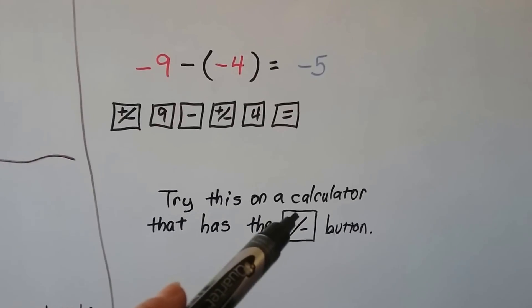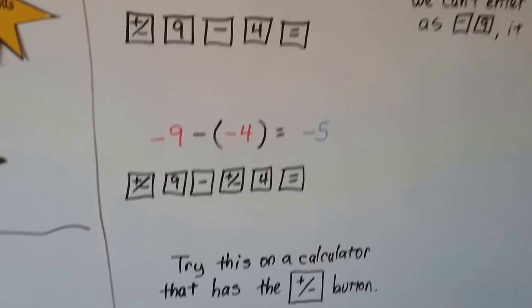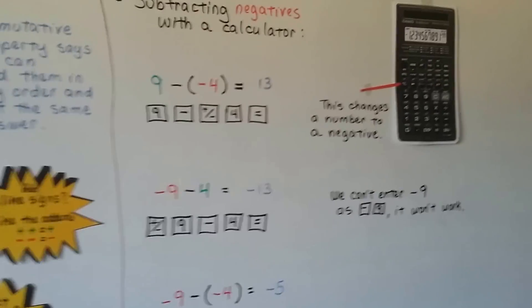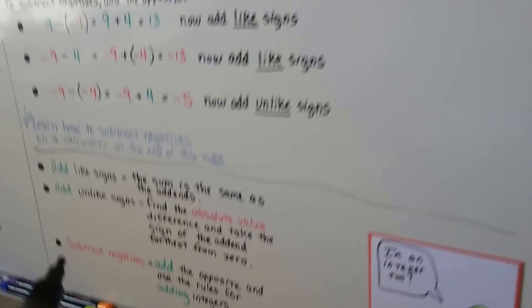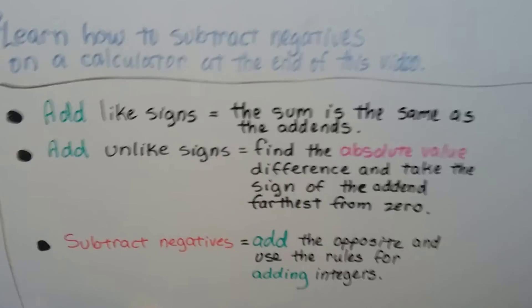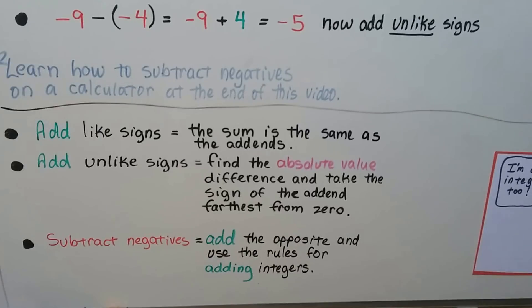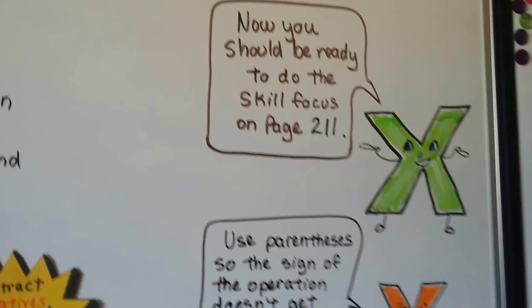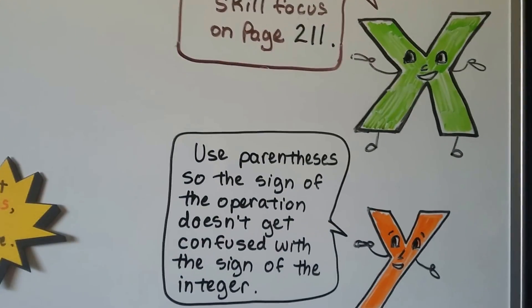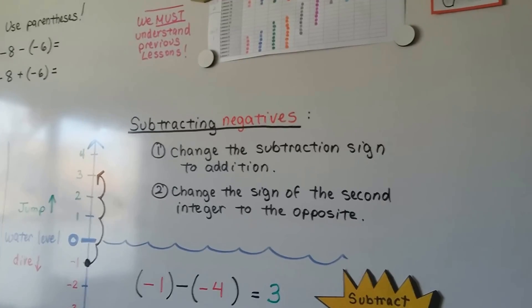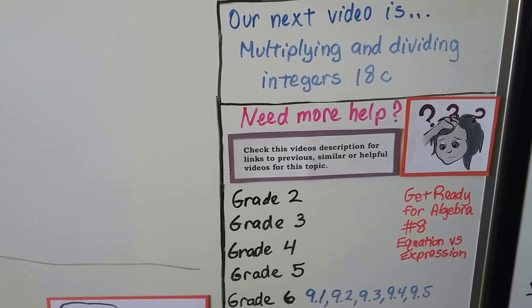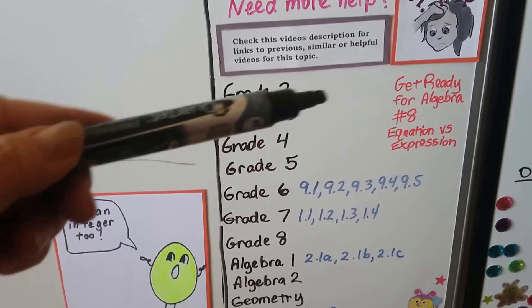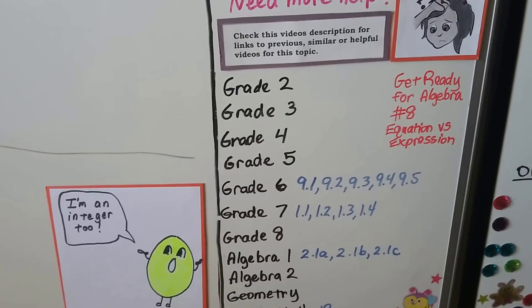Try this on a calculator with a plus/minus button and practice. If you're doing these on the GED test and you've got that calculator, you can use it. If it's too confusing and you'd rather stick with the rules we've been using, that's fine too — answer questions however makes sense to you. Now you should be ready to do the skill focus on page 211. Remember, we can use parentheses so the sign of the operation doesn't get confused with the sign of the integer. We're going to talk about multiplying and dividing integers in the next video, 18c.